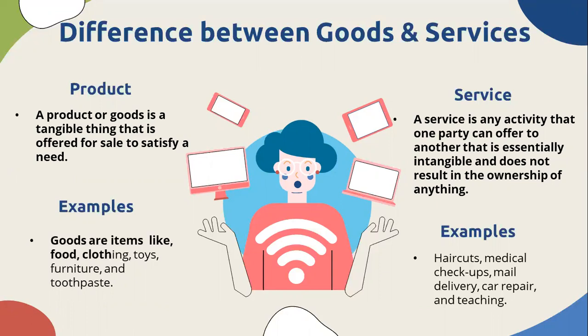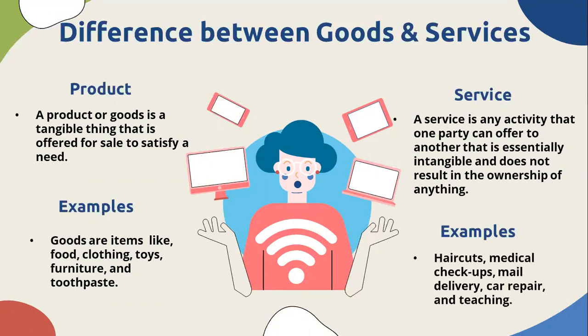Examples of products are food, clothing, toys, furniture, and toothpaste. Examples of services are haircuts, medical checkups, mail delivery, car repair, and teaching.